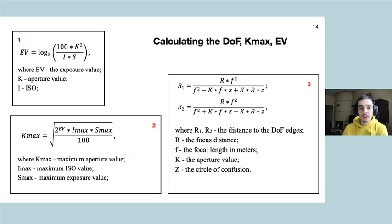So instead we use the exposure value and maximum acceptable ISO value to determine the ideal depth of field using formula number 2. We then get the boundaries of that ideal depth of field using formula 3.